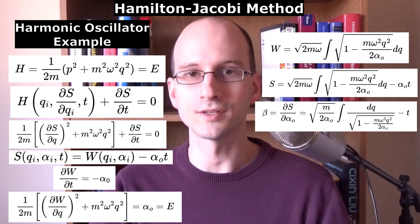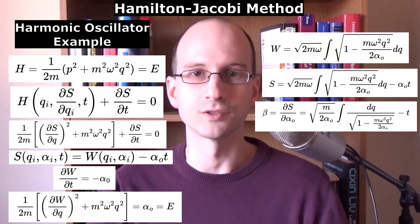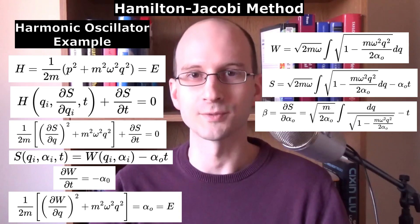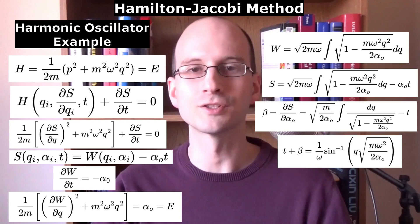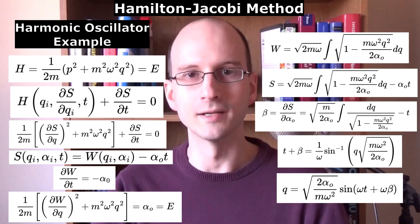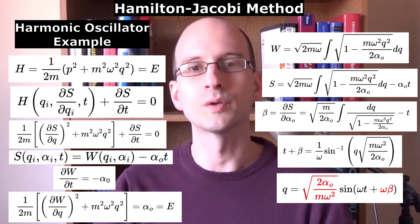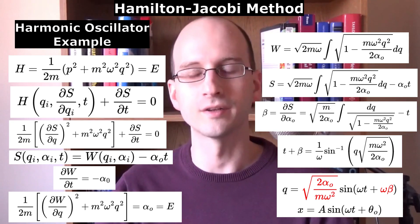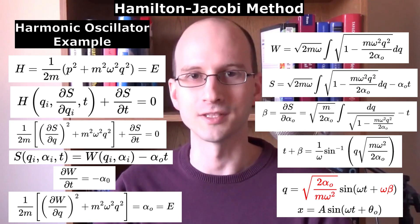If you're a math whiz, you can do this integral. I looked up the answer on the next line of the textbook. The solution is the inverse sine function. Inverting it for q, we get a sine function with time. These parts are all constant, so we can simplify them and compare them to the harmonic oscillator equation we learned in college physics.